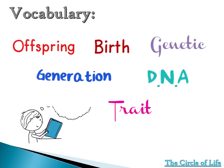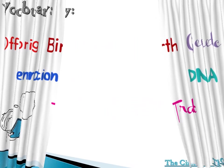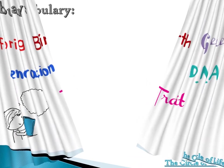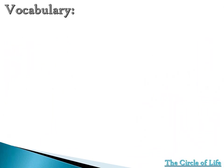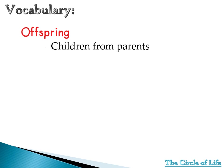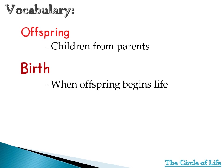Great job! Now let us try to know their meaning. For our first word, we have offspring. What is an offspring? These are children from parents — one great example is you. Next, we have birth. Birth is the process of when an offspring begins life. Another example is when you were in your mother's womb.